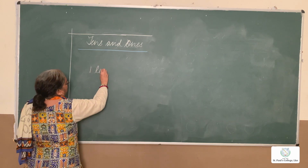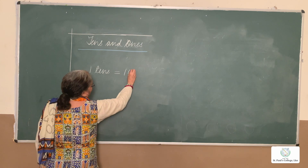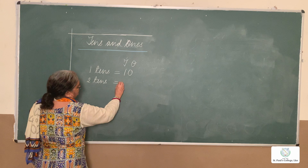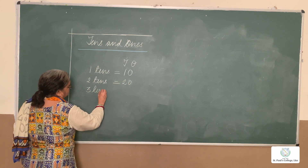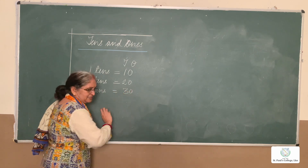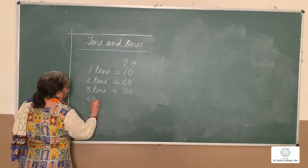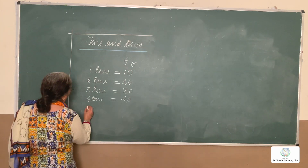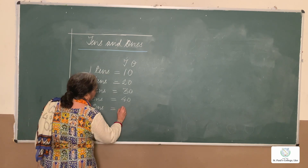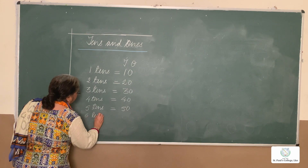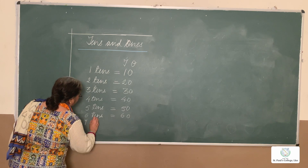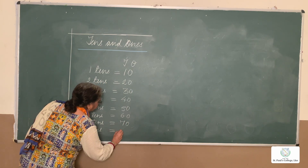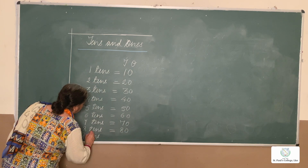1 ten equals to 10, and over here we write T and O as usual. Then 2 tens is 20. 3 tens means 30. Pay attention — 4 tens means 40. Then 5 tens equals to 50. 6 tens equals to 60. 7 tens is 70. 8 tens is 80.